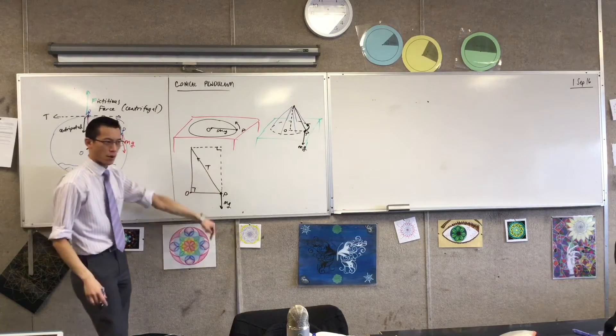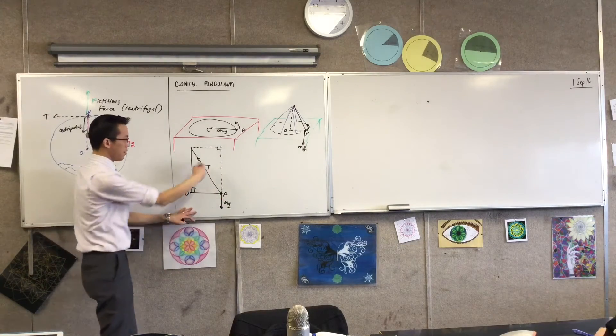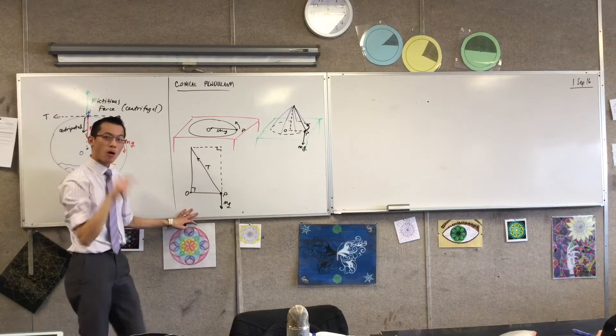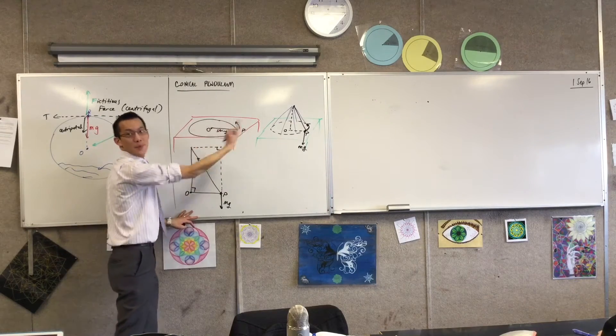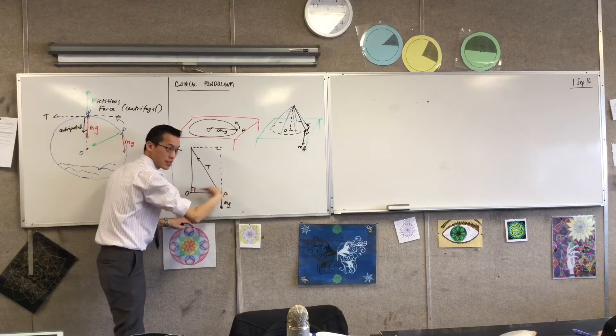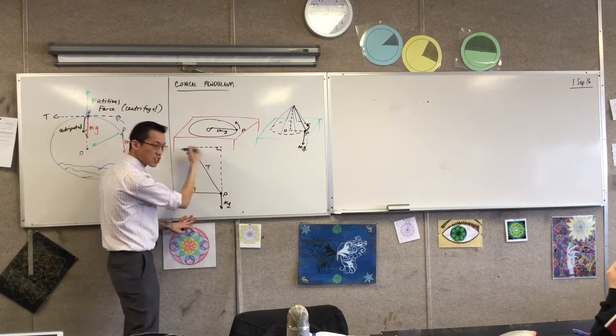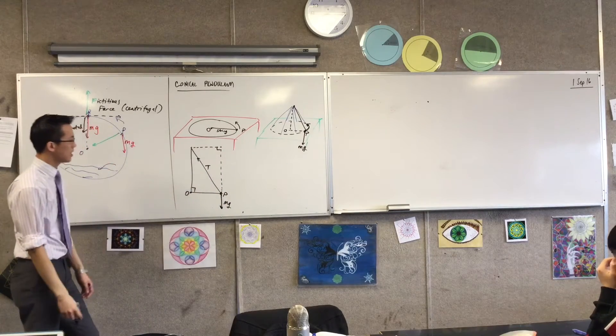Now, we were just talking about this vertical component. Nothing's happening. There's this horizontal component. The horizontal component is what's making it move in a circle. It's moving this way, toward the center. So that's the direction it's facing you.